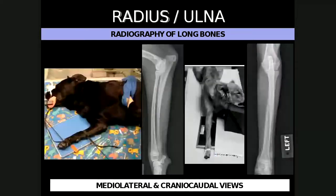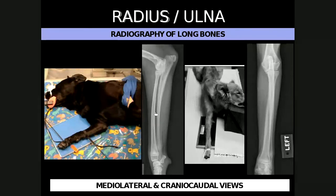For the radius and ulna, the affected limb is positioned on the cassette, the unaffected limb is pulled out of the way, and the centering point is on the midshaft of the radius and ulna. For the craniocaudal view, the patient is in sternal recumbency, the affected limb is pulled cranially, and the head and neck are positioned to the side to avoid superimposition. Center on the midshaft of the radius and ulna and include the proximal joint — the elbow — and the distal joint — the carpus.